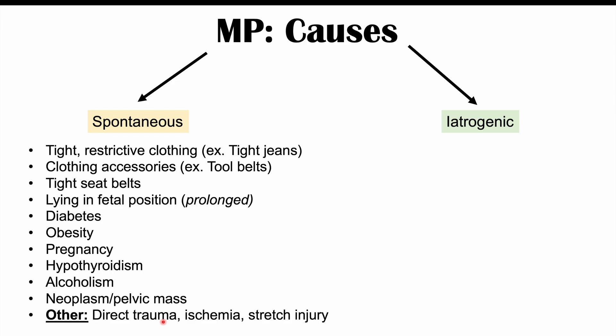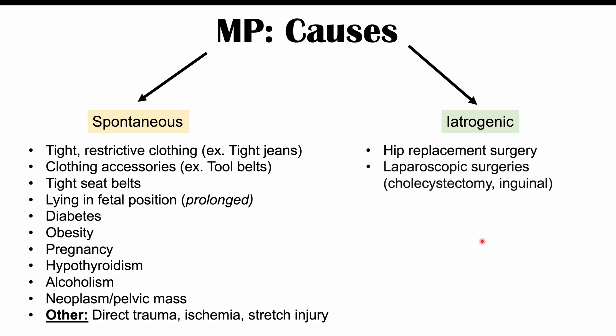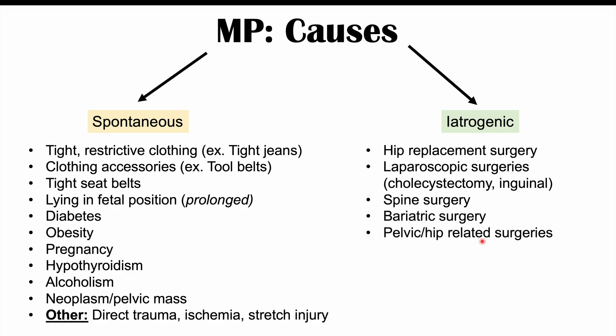Other spontaneous causes include direct trauma to the area, causing damage to the lateral femoral cutaneous nerve; ischemia, meaning loss of blood flow to that area; and stretch injury from an accident or physical activity affecting the hip around the ASIS. Iatrogenic causes include hip replacement surgery, laparoscopic surgeries, spine surgery, bariatric surgery, and pelvic and hip-related surgeries, all of which have been associated with the onset of Meralgia Paresthetica.